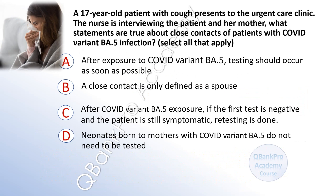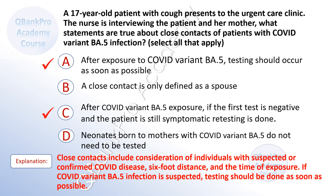A 17-year-old patient with cough presents to the urgent care clinic. The nurse is interviewing the patient and her mother. What statements are true about close contacts of the patient who has COVID variant BA5 infection? Select all that apply. A. After exposure to COVID variant BA5, testing should occur as soon as possible. B. A close contact is only defined as a spouse. C. After COVID variant BA5 exposure, if the first test is negative and the patient is still symptomatic, retesting is done. D. Neonates born to mothers with COVID variant BA5 do not need to be tested. The correct answers are A and C.